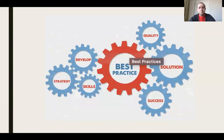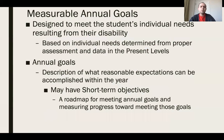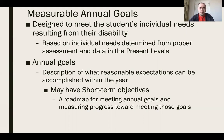With that brief review out of the way, we're jumping into best practices for measurable annual goals. Measurable annual goals are designed to meet the student's individual needs resulting from their disability, based on assessment information from the present levels. The annual goals describe what we think that student can do in one year's time — it's a reasonable expectation. We won't say a beginning reader will jump six reading levels; one or two levels is realistic.